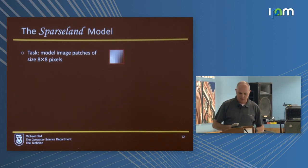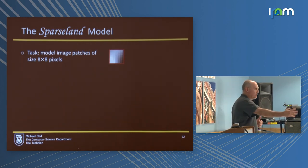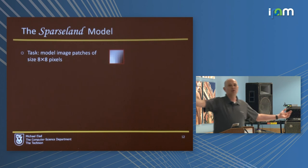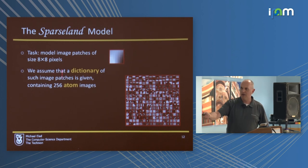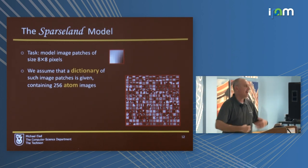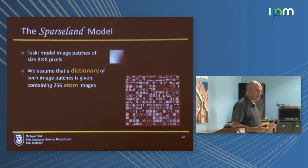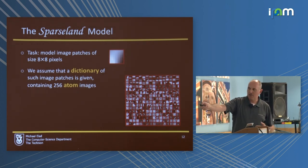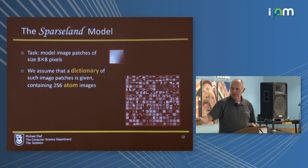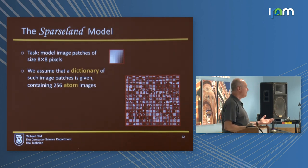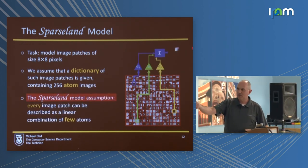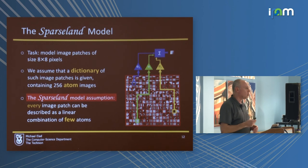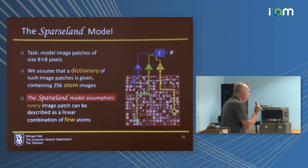Here is a patch of size 8×8 pixels — not just one patch, but a corpus of such patches taken from natural images. The model starts by assuming it has a dictionary: a set of patches of the same size, 8×8, in this case 256 of them, referred to as atoms. The model assumption is that this patch and many others like it can be described as a linear combination of only a few atoms from the dictionary. The word few here is critical.